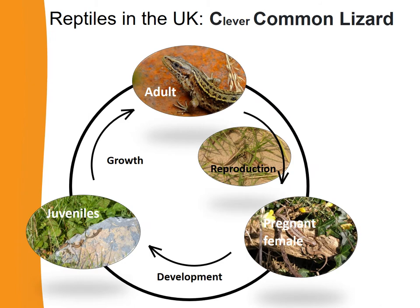Let's start looking at the life cycles of the UK reptiles, beginning with the common lizard. There is an adult, and at the point when it is an adult it is old enough to reproduce. The adults reproduce, then we have a pregnant female, and within her the young develop until she gives birth. Those young — the juveniles — then develop and grow further into adults. So it's a circle — that is the life cycle of the common lizard.